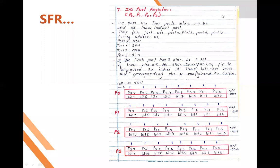In the last lecture, we were discussing the architecture of the 8051, then the PIN description, and then the special function registers one by one. We discussed the interrupt enable and interrupt priority registers. Next, we are discussing the input ports, which are also special function registers.